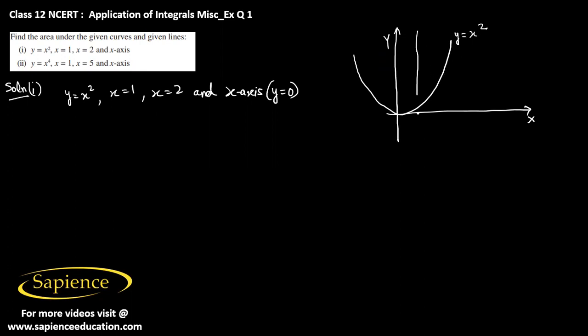So the equation is y equals x square. And x equals 1 means it is a straight line which is parallel to the y-axis and it will intersect the x-axis at 1, 0. Therefore the equation of this line is x equals 1. Now if we draw the straight line x equals 2, that will also be parallel to the y-axis. It will intersect the x-axis at 2, 0.